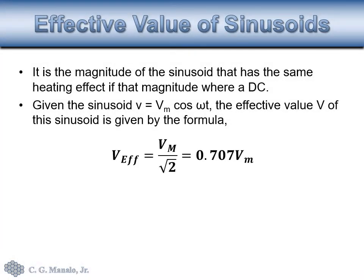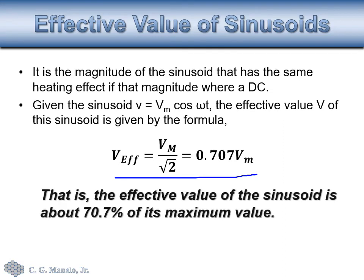Now let's go to the effective value of sinusoids. A sinusoid is a periodic function that has an average of zero over a single cycle. The effective value is simply equal to its amplitude divided by square root of 2, or 0.707 times the amplitude. So the effective value is just 70.7% of its maximum value.